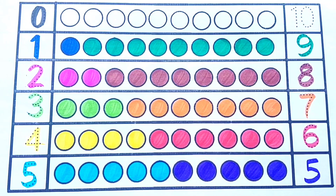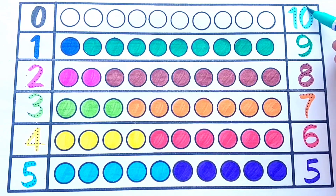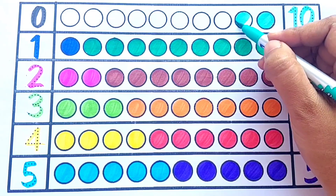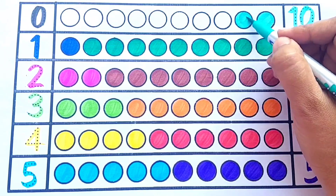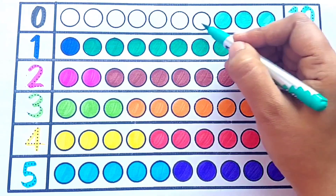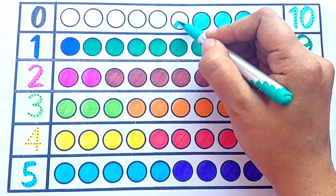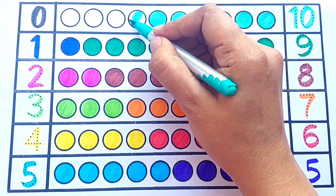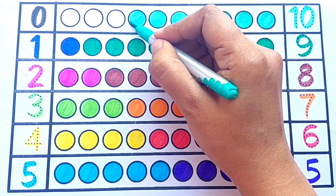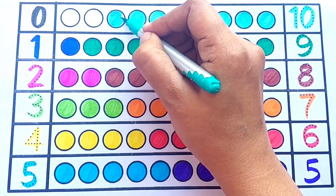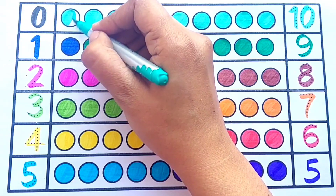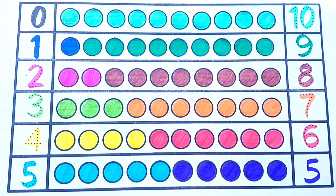Sea green color: 10. 1, 2, 3, 4, 5, 6, 7, 8, 9, 10. 10 circles.